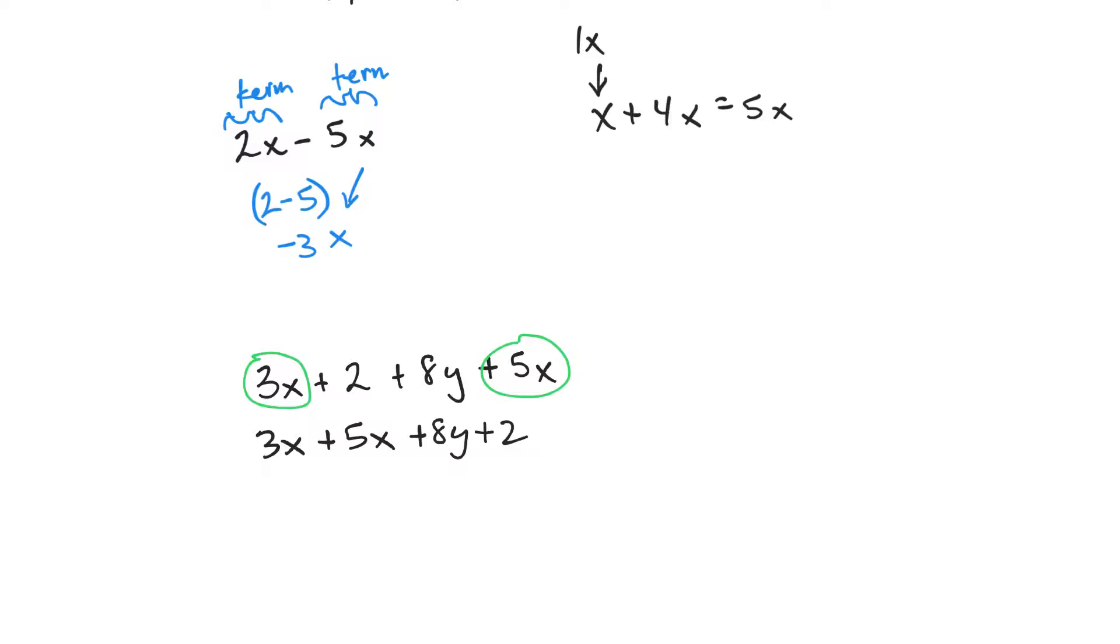Well, I can, as it's called, combine these like terms to call it 8x. So that part would be 8x and then plus 8y plus 2.